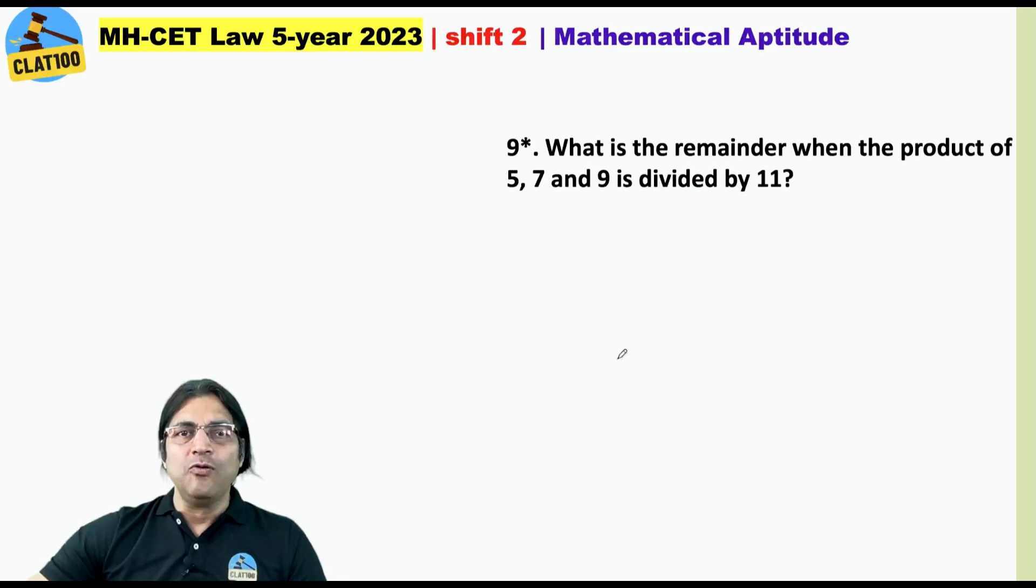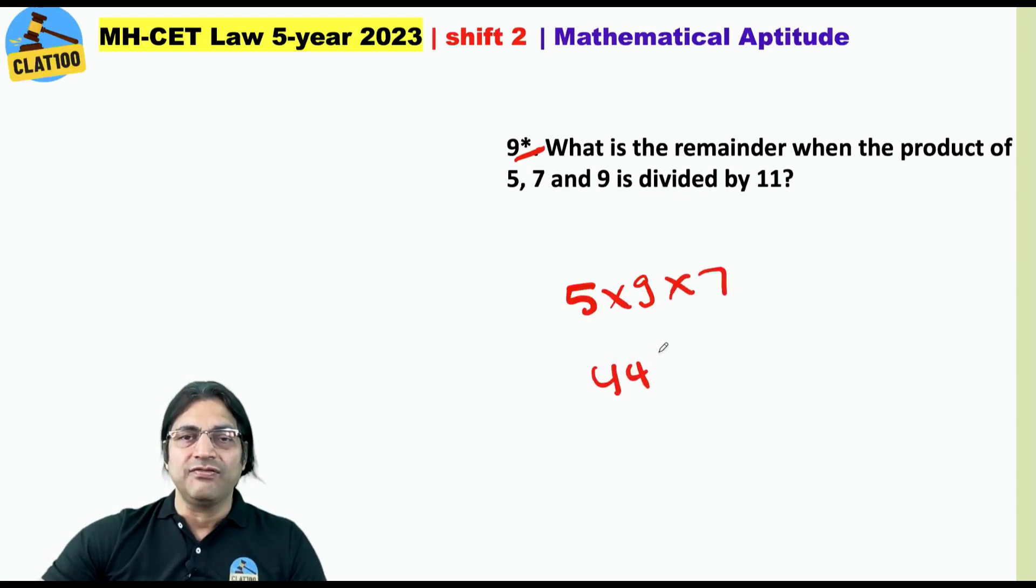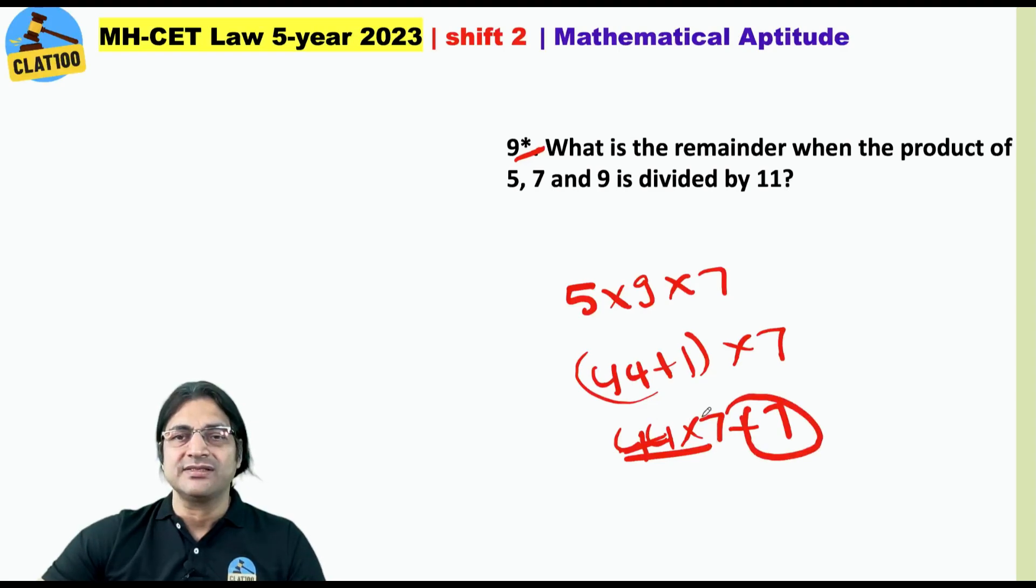We have put a star mark here because we are not sure if this exactly was the question, but it was similar. What is the remainder when the product of 5, 7 and 9 is divided by 11? We can do it like this: 5 into 9 into 7. 5 into 9 is 45, that is 44 plus 1, into 7. That is 44 into 7 plus 7. Now 44 into 7 is always divisible by 11 because 44 is divisible by 11. So the answer is 7.